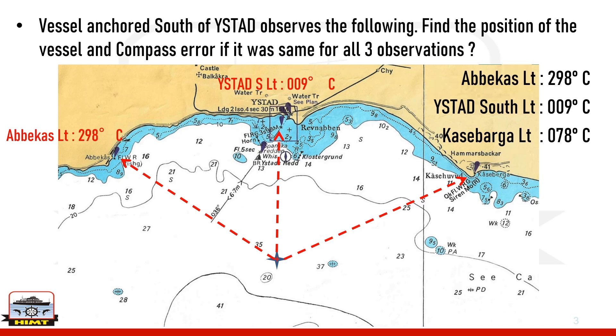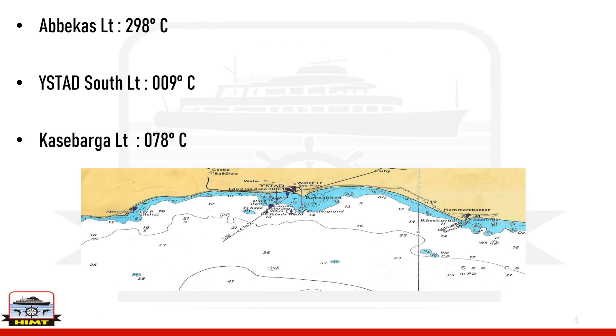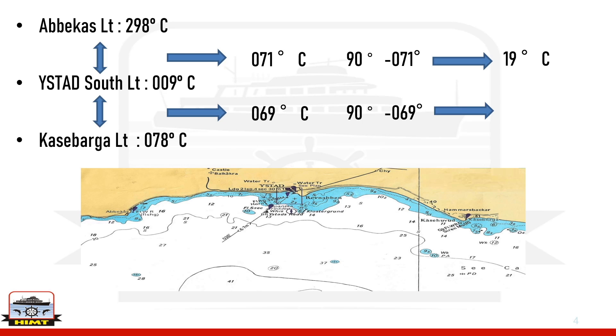The first process now is to find out the difference between these compass bearings. The first compass bearing, that is 009 and 298 compass, comes to 071 degrees. The second difference between Weistad and Kasebarga comes out to 069. The next step for this is to do 90 degrees minus 071 degrees, that is 90 minus the angle difference. In the first case it comes down to 19 degrees. In the second case, 90 minus 069 degrees comes out to 21 degrees. It is these two angles we will be using on the chart.